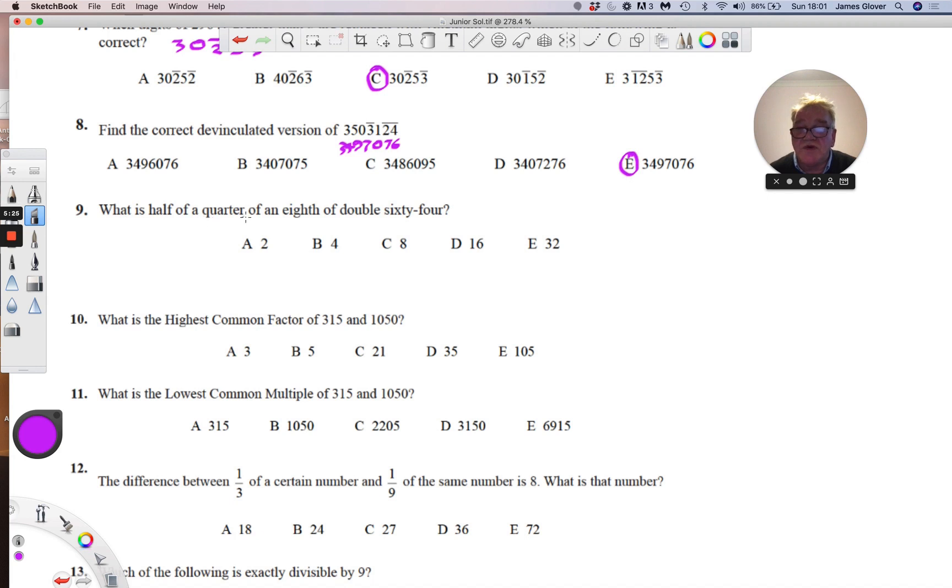What is half of a quarter of an eighth of double 64? So we are looking for double 64. That's 2 times 64.